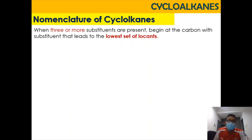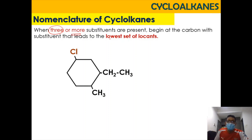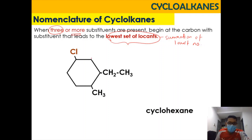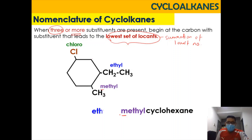Now for three or more substituents, we have to find the lowest set of locants, meaning we look for the combination of position numbers that gives the smallest sum. In the example with cyclohexane carrying chloro, ethyl, and methyl substituents, alphabetical order tells us chloro comes first (C), then ethyl (E), then methyl (M).